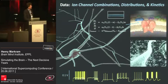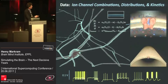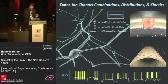You have to not only know the combination, you have to know how they're distributed on the branches, and you have to know their biophysical characteristics — when they are sensitive to the voltage, how fast they open, and how big they open, and so on.